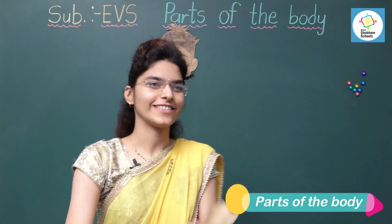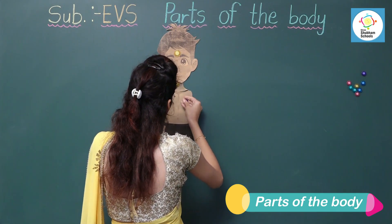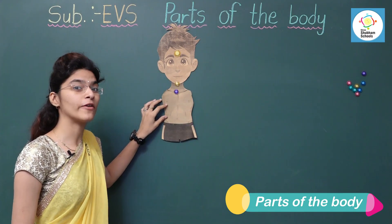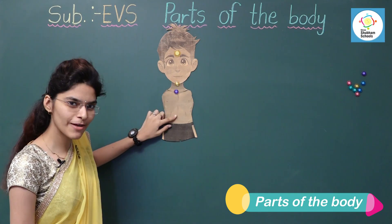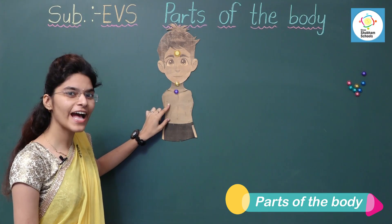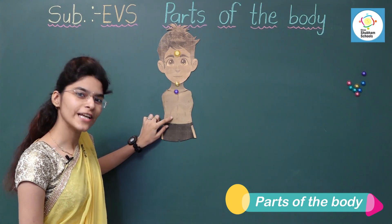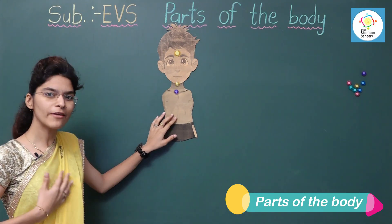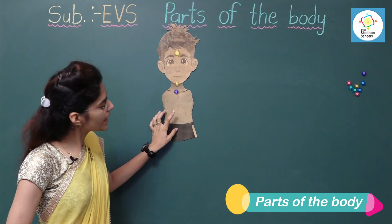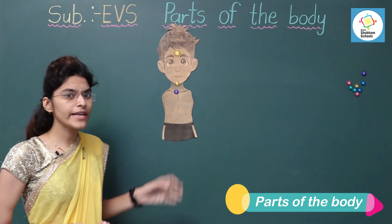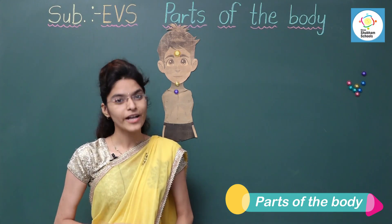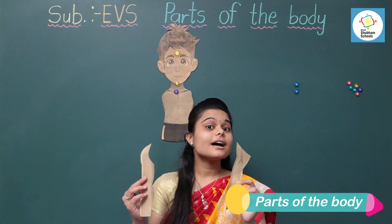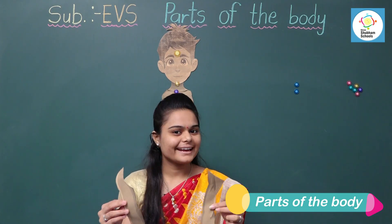This is our chest. The chest is the upper front part of our body between the neck and stomach. Stomach is located in the middle of our body. When we eat food, it goes into the stomach. These are our hands.